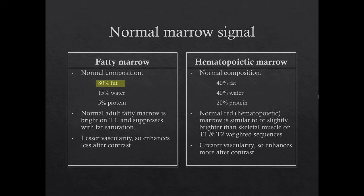Normal hematopoietic marrow has less fat, approximately 40%. Because of its higher water content, it is therefore darker on T1 and higher in signal on T2. A good internal reference is the skeletal muscle. Hematopoietic marrow should be similar to or slightly greater in signal to the skeletal muscle on T1-weighted sequences. It will also be slightly greater than skeletal muscle on T2-weighted sequences, but should not be dramatically greater in signal. It also has more vascularity and enhances more after contrast.